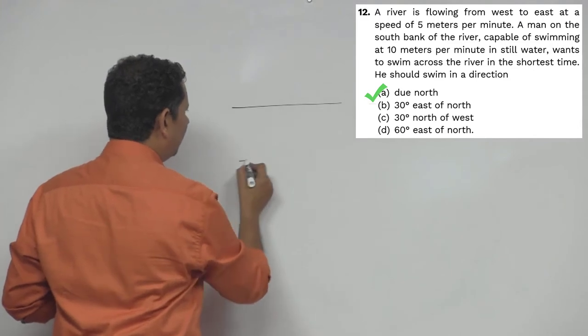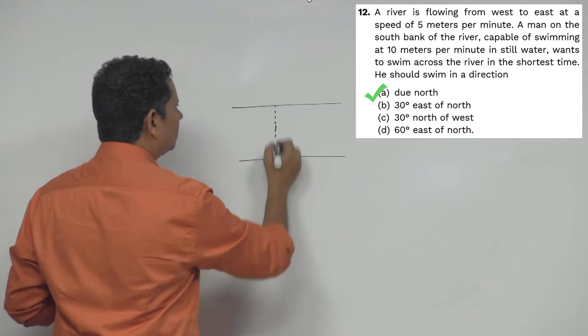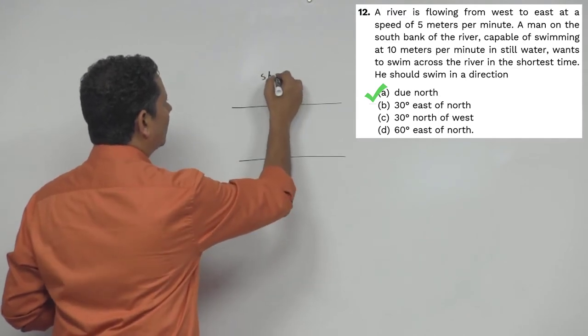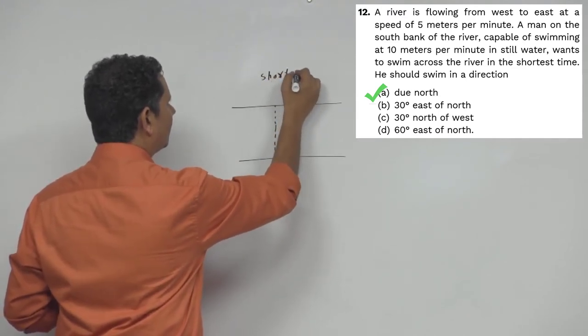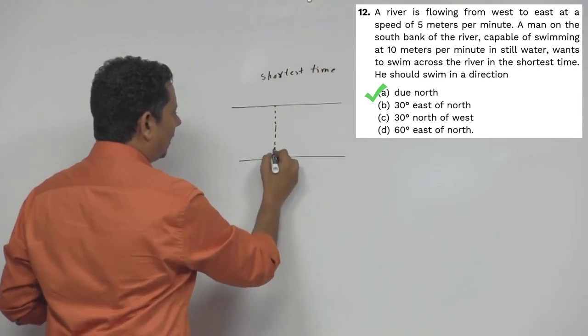So here the scenario is that a person is standing here and wants to cross here in the shortest time. In the shortest time, the person is traveling here.